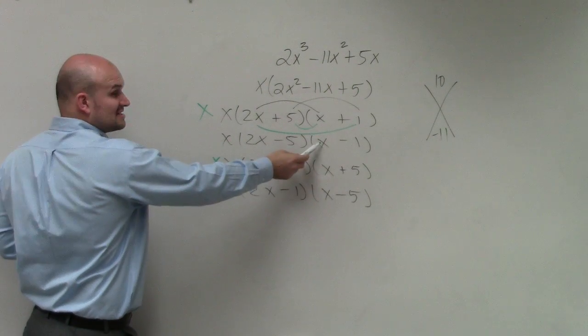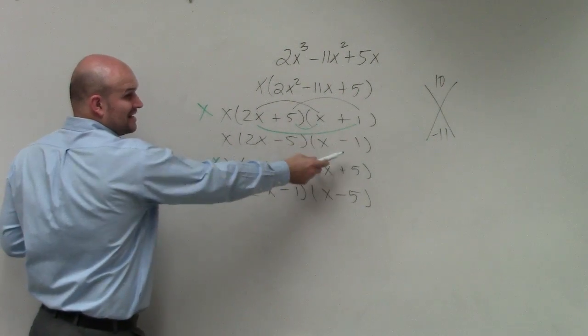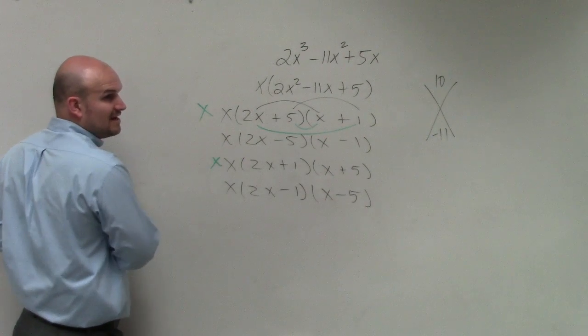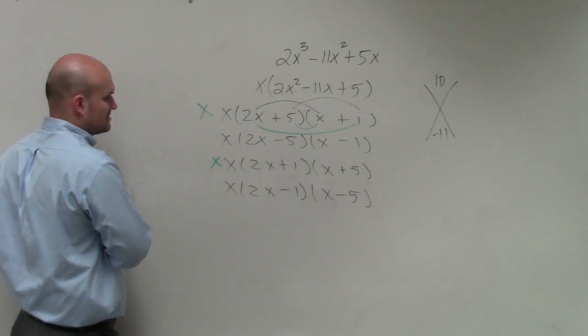Let's try this one. 5 times x is negative 5x. 2x times negative 1 is negative 2x. Negative 2x minus 5x is negative 7x. That doesn't work.